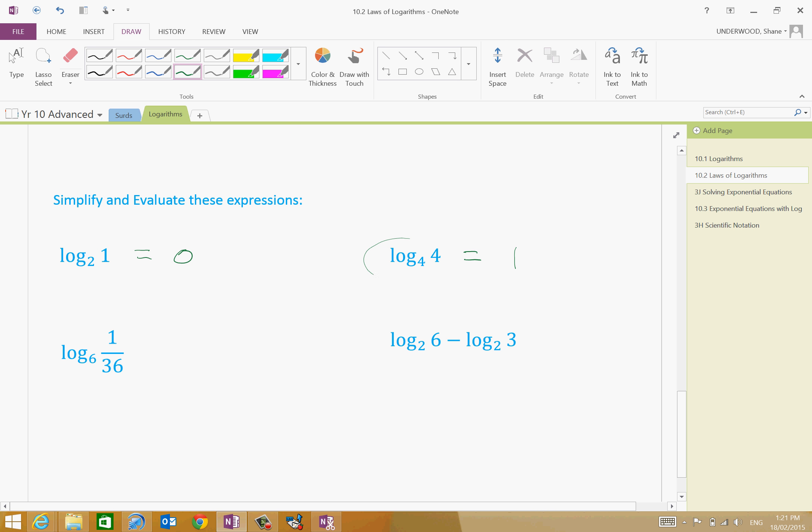And this is, of course, law 5, if you like. And this is, of course, law 4. Any log of any base to 1 is 0. And then over here, any logarithm which has log of 4 to 4 is 1.